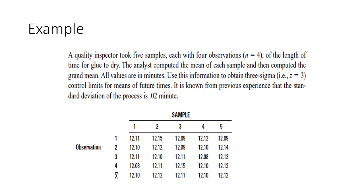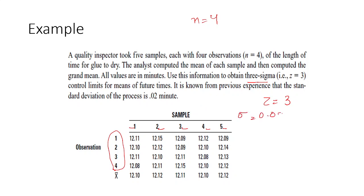This is the question: a quality inspector took five samples, each with four observations, so n equals four. The analyst computed the mean of each sample and then calculated the grand mean. All values are in minutes. Use this information to obtain three-sigma control limits, so z equals three. It is known from previous experience that the standard deviation sigma is 0.02.